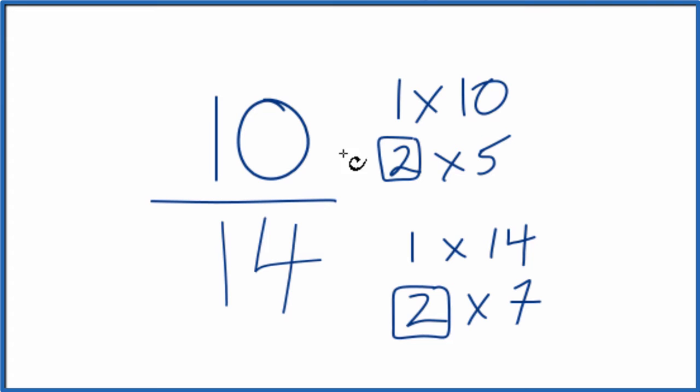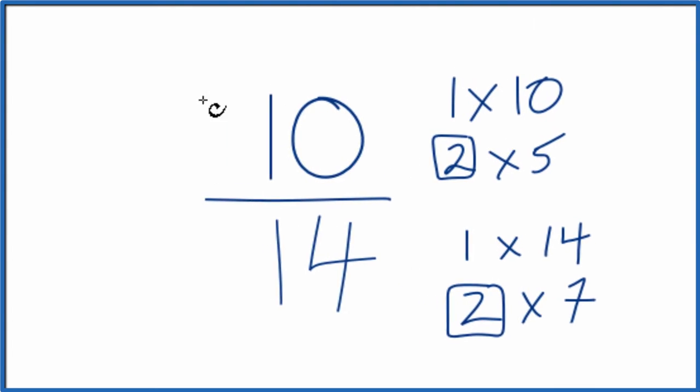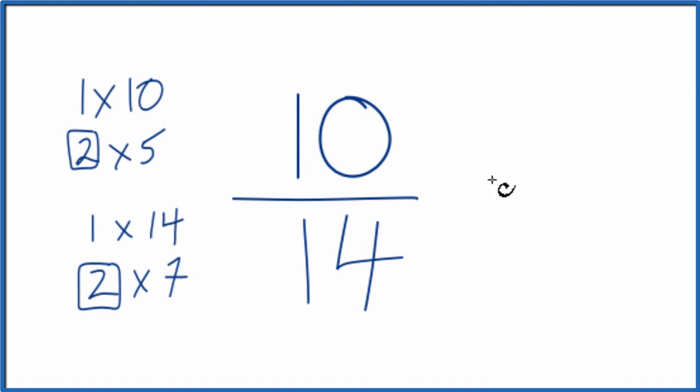So we divide 10 by 2 and 14 by 2, and we'll have simplified 10 14ths. Let's move these over here. 10 divided by 2 gives us 5, and 14 divided by 2 gives us 7.